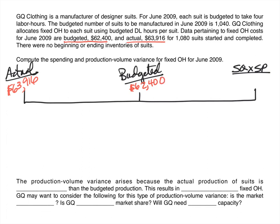We calculate the first fixed cost variance, which — similar to variable overhead — is a spending variance. That's the difference between pegs one and two. Mathematically, you find a spending variance of $1,516. Actual costs are higher than budgeted, which is not a good thing, so that will be an unfavorable variance.